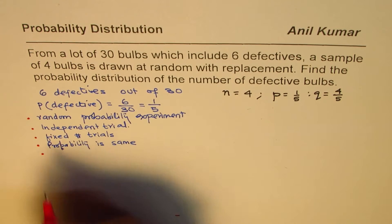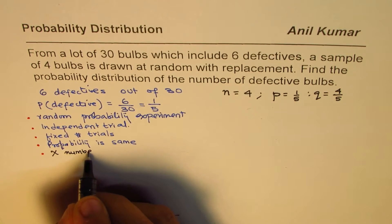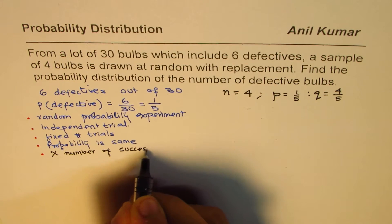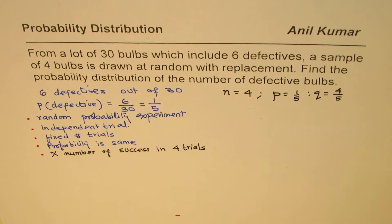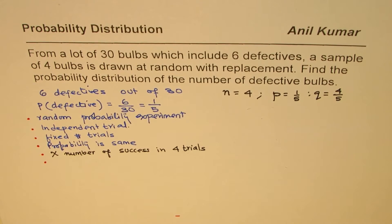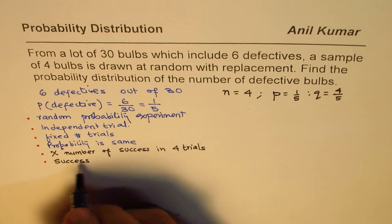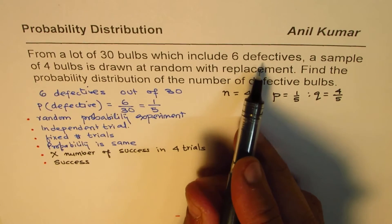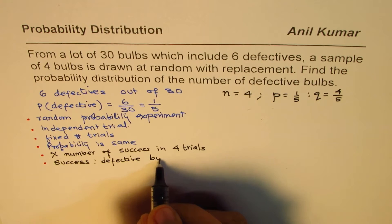Let me define random variable X. We say X is the number of successes in 4 trials. Now, don't always take success as a positive thing — this is very important. In our case, success is drawing a defective piece — a defective bulb. So if we draw a defective bulb, we say it is a success.